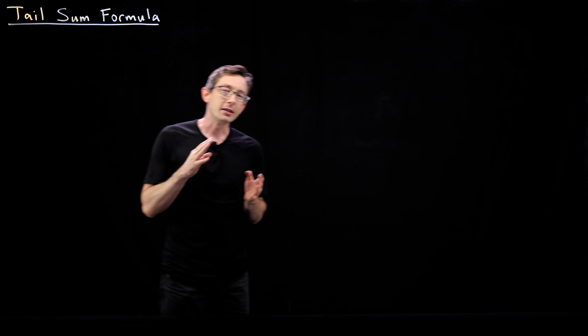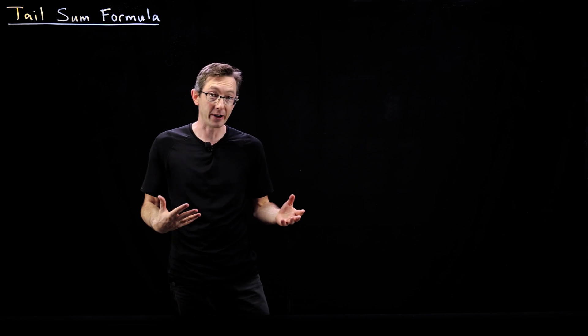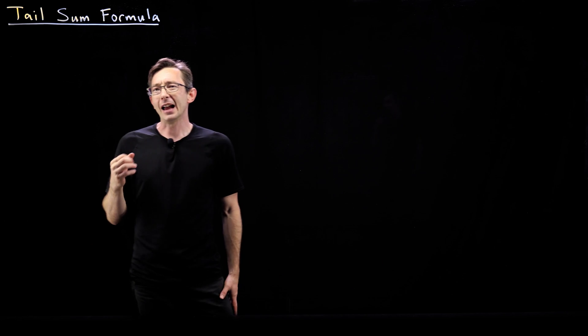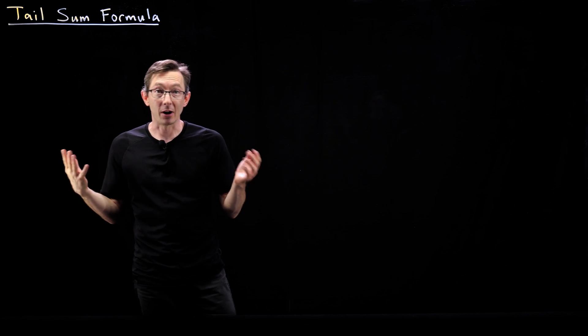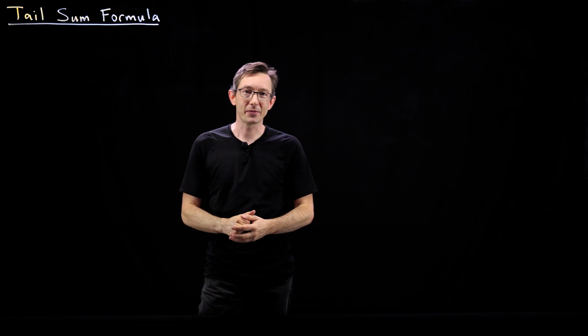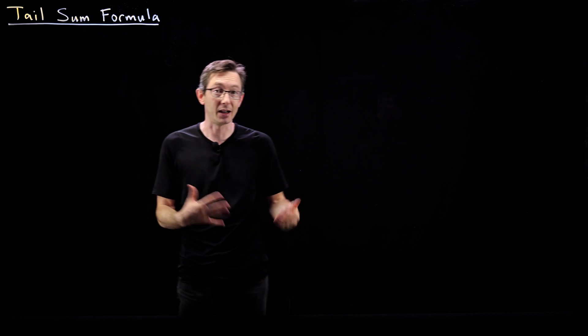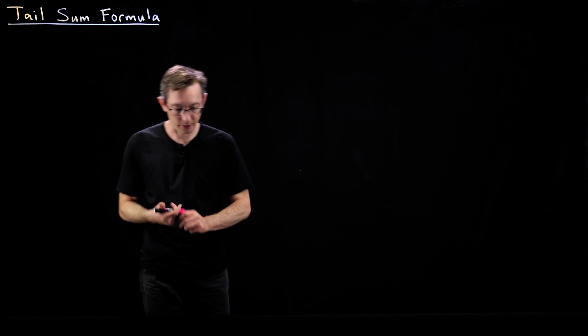Welcome back. In the last set of lectures, we've been proving some pretty heavy results and properties of random variables and functions of random variables like expectation, variance, things like that. And today I just wanted to show a fun, interesting property called the tail sum formula. It's pretty easy to derive and it ends up being a useful formula and a little bit surprising.